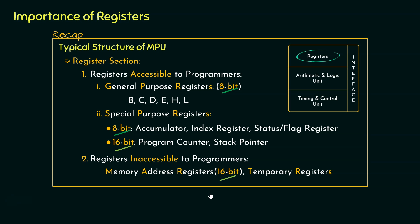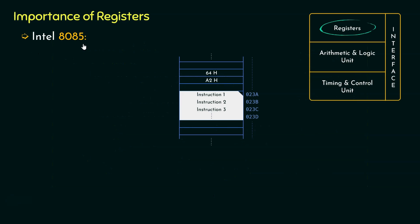Now why is that? In order to understand this, let's talk specifically about Intel's 8085 microprocessor. We already know the word length of this is 8-bit. Now let's say in one of the general purpose registers of 8085, we would like to store the data 64H. Notice, this is a hexadecimal value, and the H is specifying that. If you remember the conversion from hexadecimal to binary, every single hexadecimal digit is nothing but a nibble in binary.